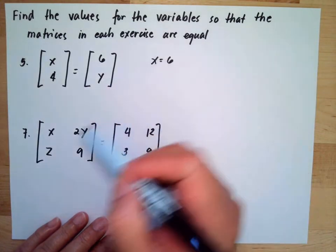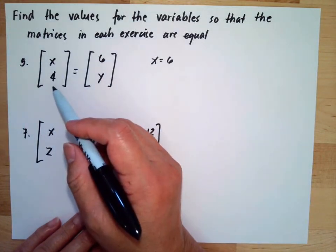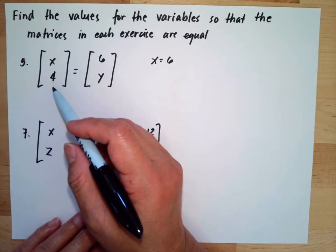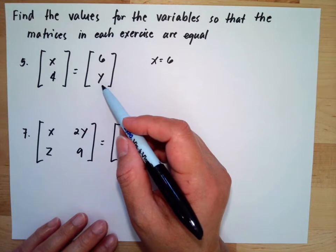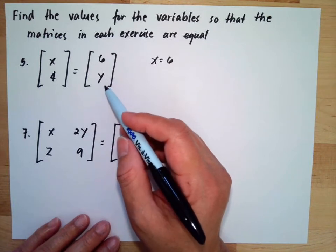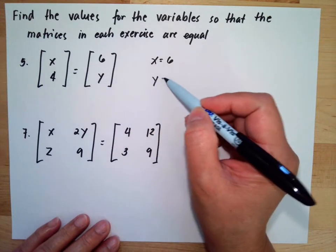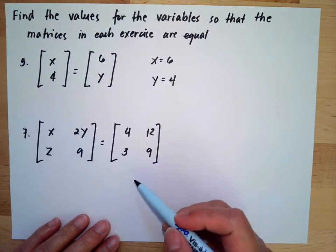Here our second row and first column is four, and here our second row and first column is y, so meaning y is equal to four.